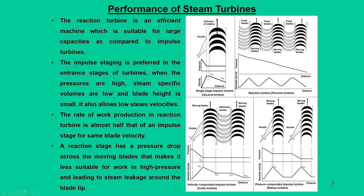Compounding can be done in two ways: incorporating multiple nozzles for each set of moving blades gives a pressure compounded or Rateau turbine, where each nozzle supplies steam at the same pressure to its individual moving blades — essentially a multi-stage impulse turbine. Another way is velocity compounding, where a single nozzle supplies steam to a set of moving blades, and the exit from the moving blades is reoriented to another set through stationary blades or guide vanes.